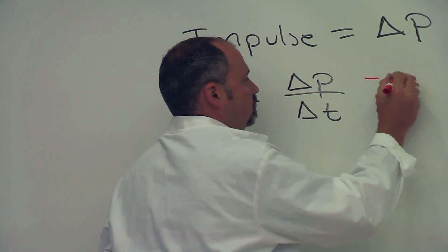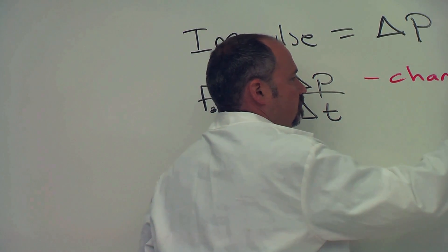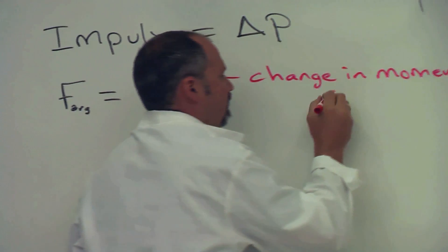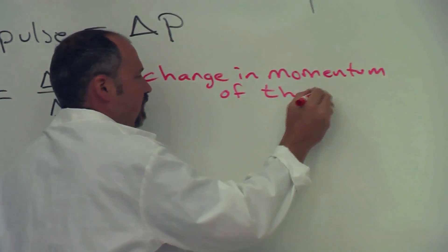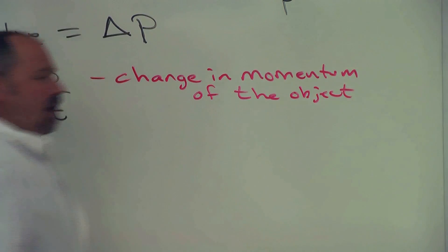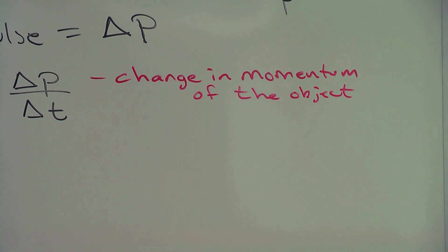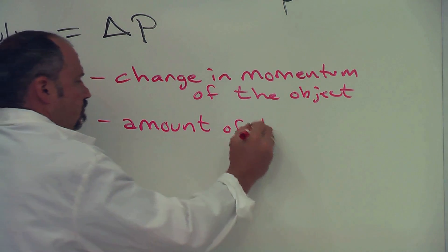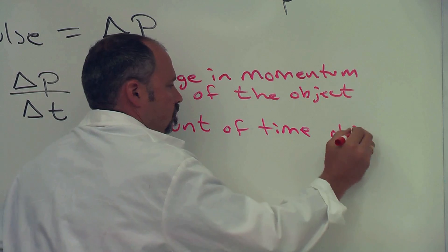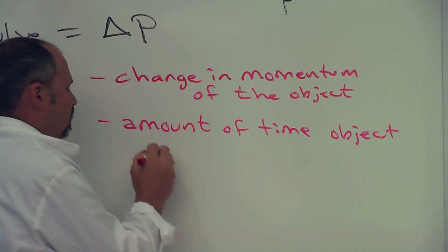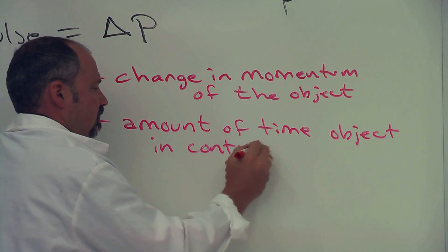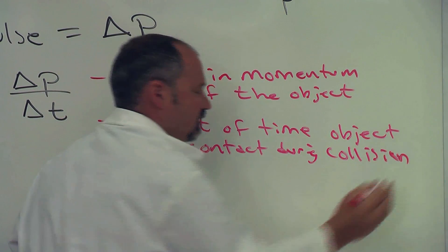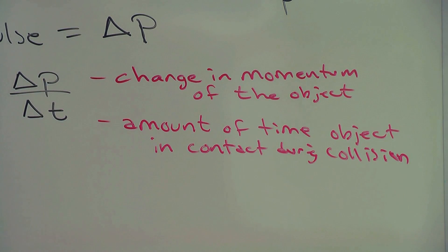So let's write this out. Change in momentum of the object. And then here this is the amount of time object is in contact during collision. In this case it's the amount of time the ball is in contact with the table.